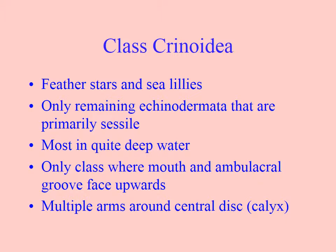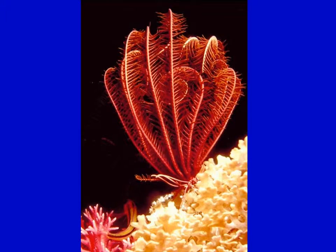These are mostly in deep water, and this is the only class where the mouth and the ambulacral groove face upwards. They're very much like a brittle star or a basket star, but they have an ambulacral groove and the mouth faces upwards. Their central disc is also known as a calyx. And here's what you're probably going to see around the mushroom rocks at Mayer Island, which is a good place.